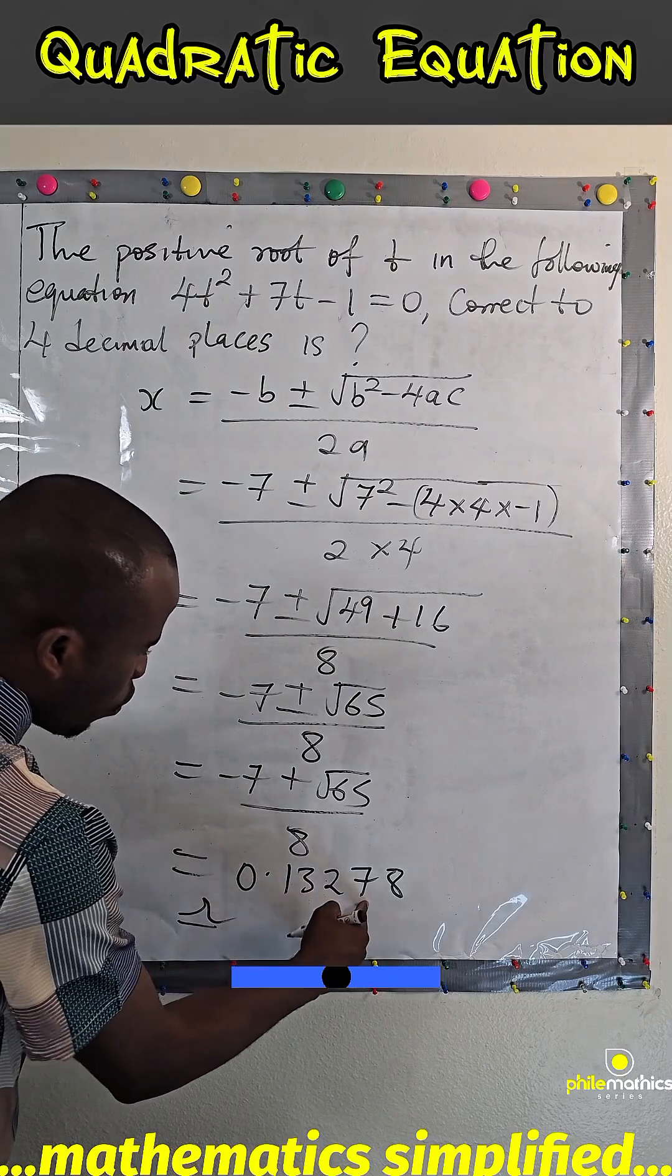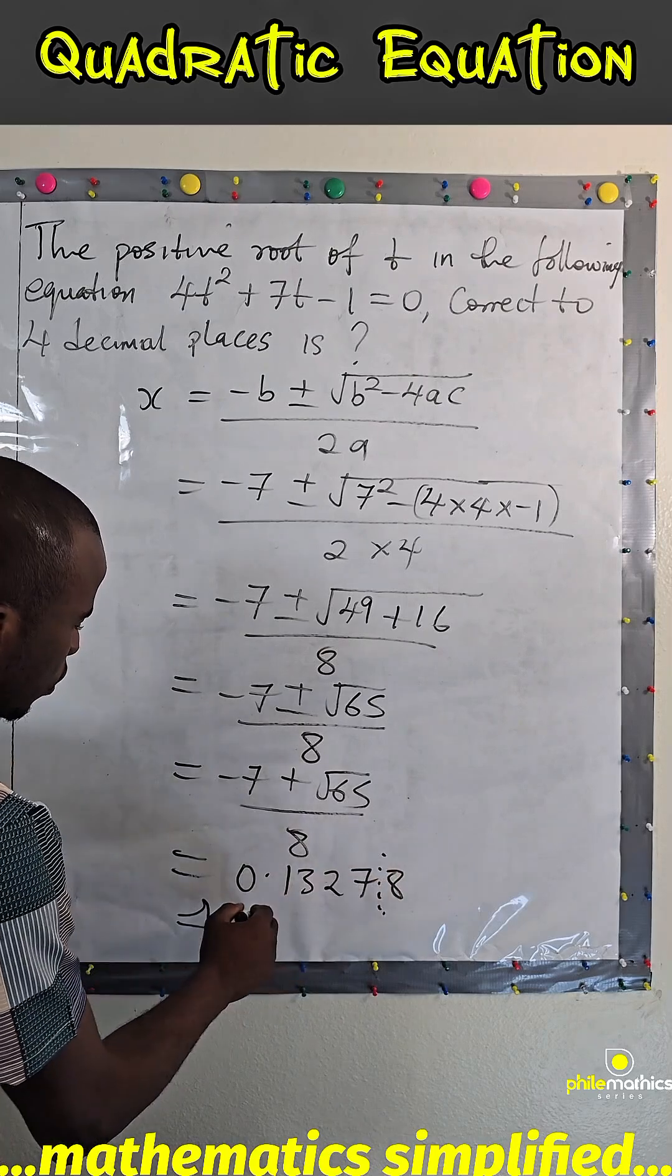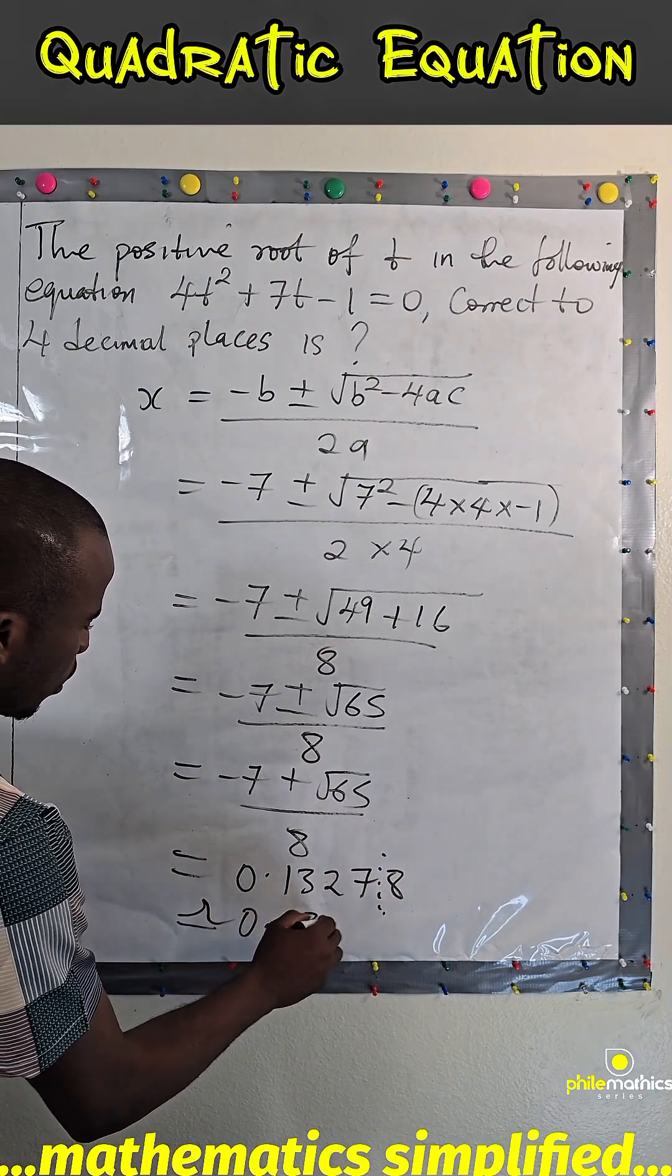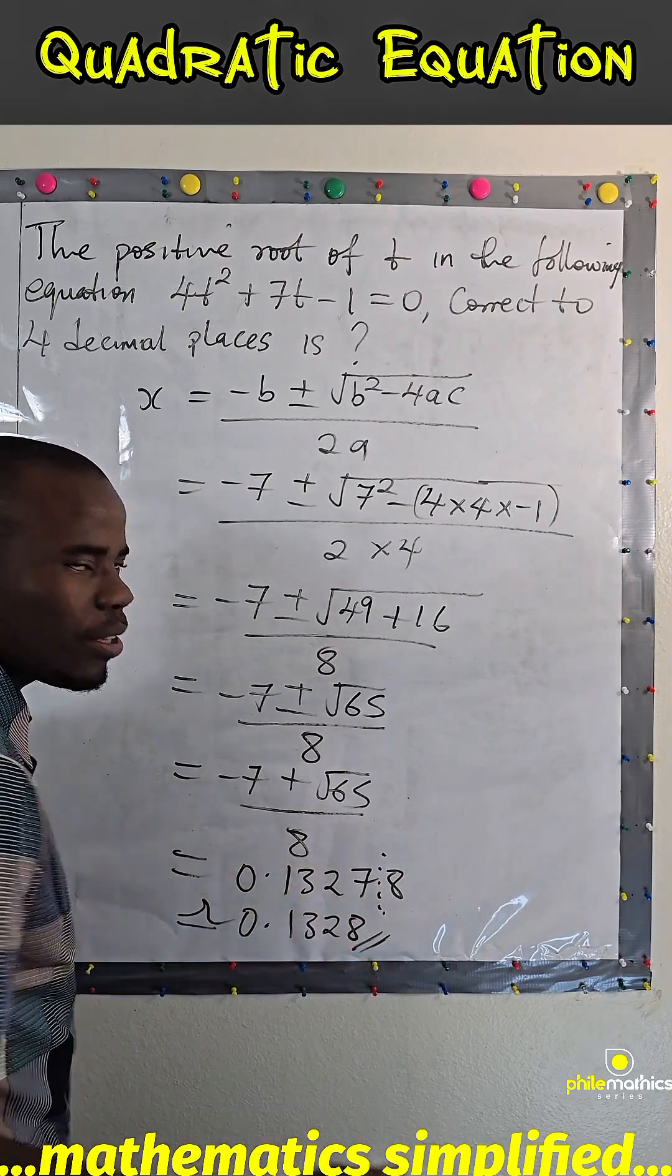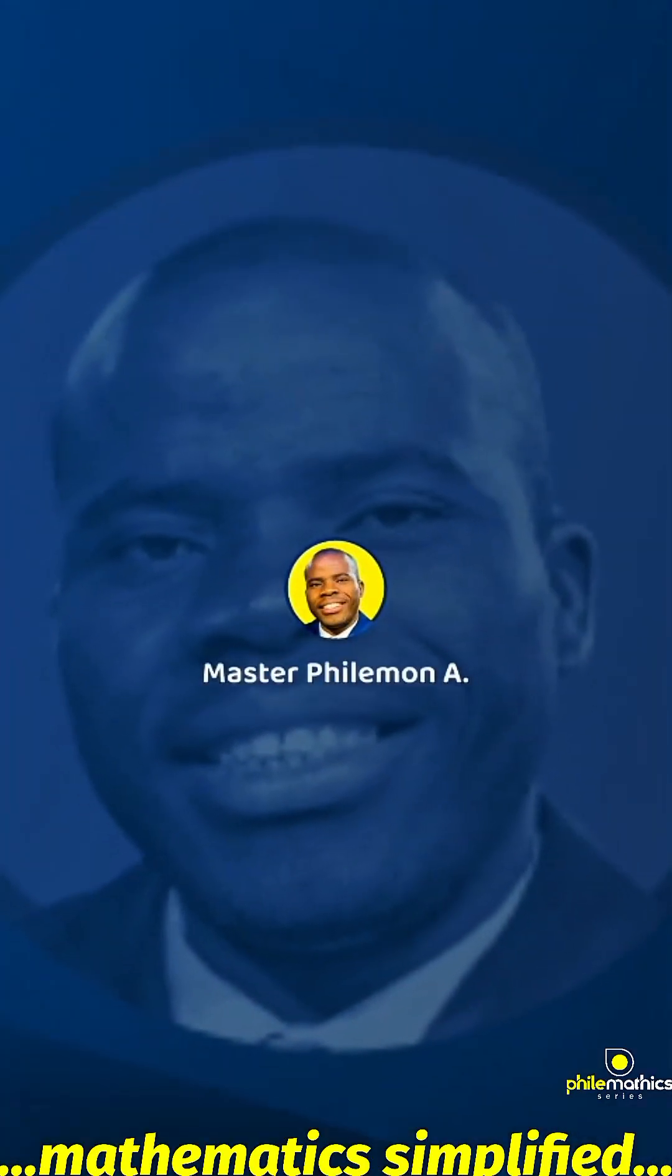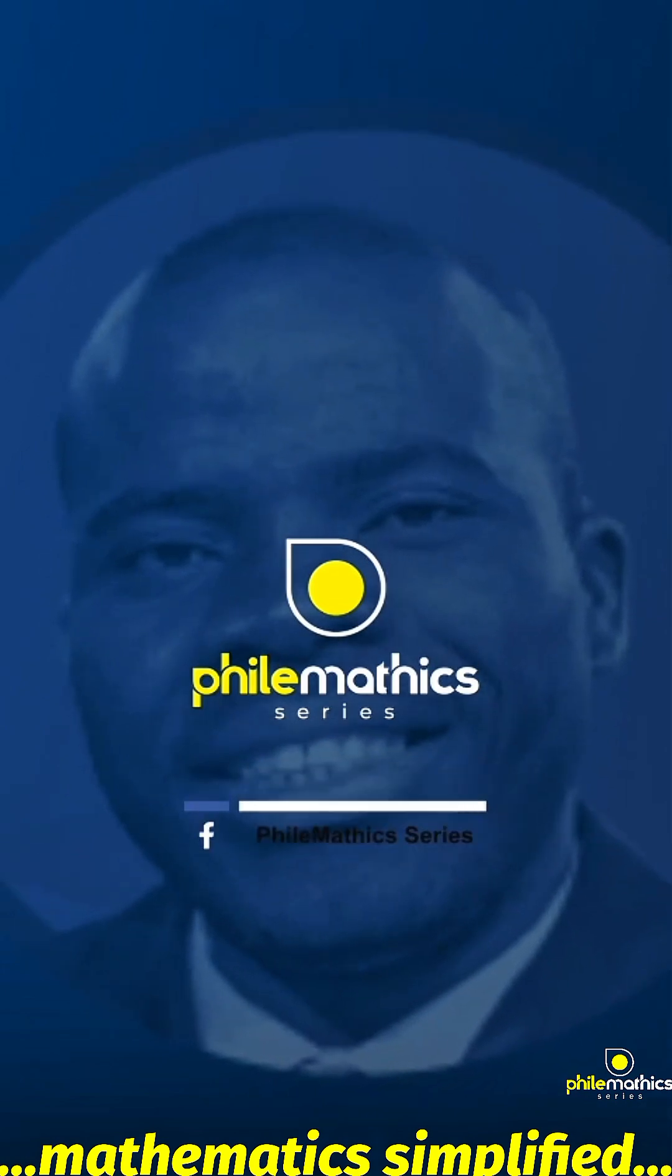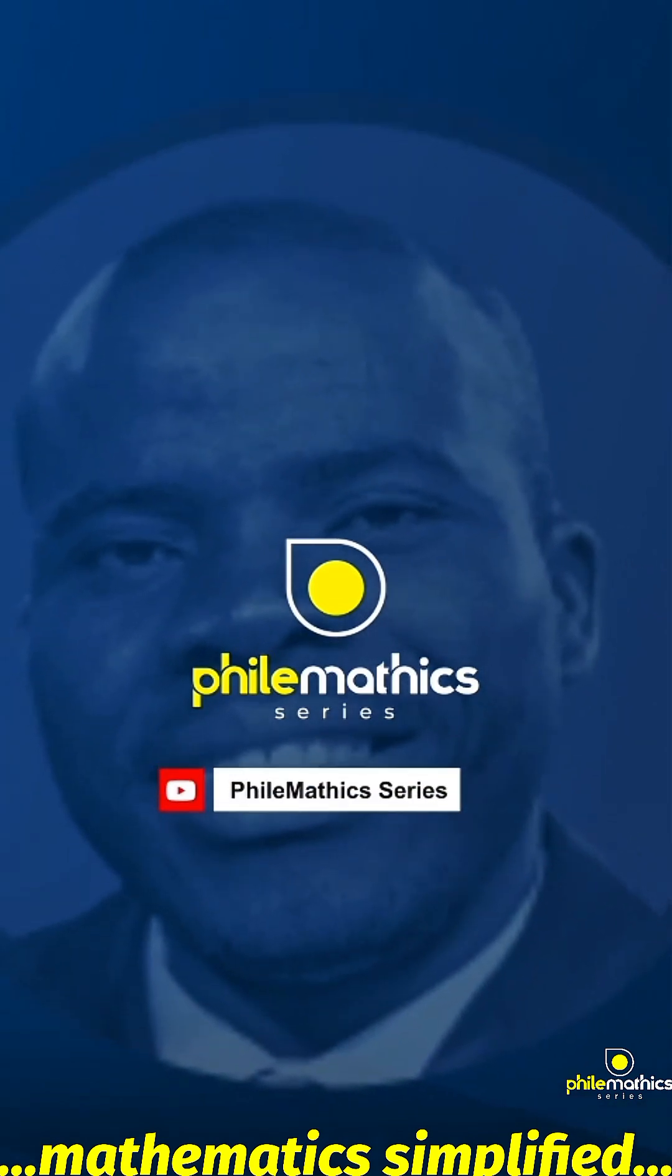One, two, three, four. Since this is five and above, we round it up. So the answer is 0.1328.